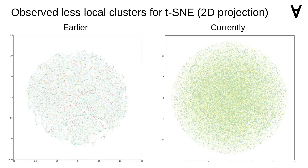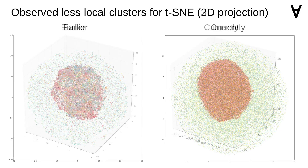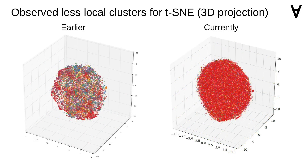Exploring further, I compared 2D projections of TSNE from the early and current tournaments, and it would appear that one can now see less pronounced local clusters. This change is even more visible when comparing 3D projections of TSNE. Perhaps TSNE is not as effective anymore?